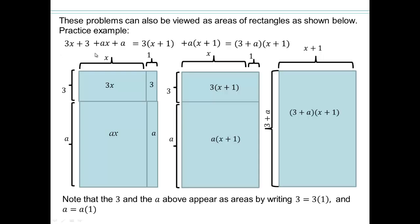So 3x + 3, that's two of these, ax + a is two of those. Then we took away this division, which made it 3 times (x+1).